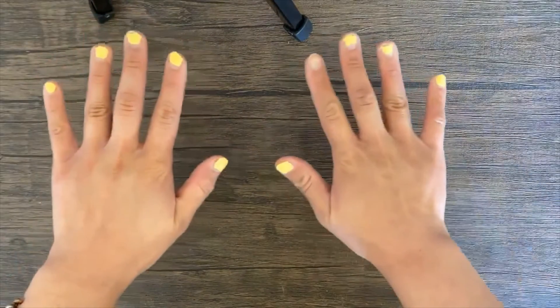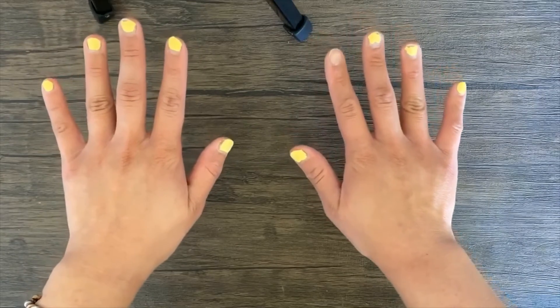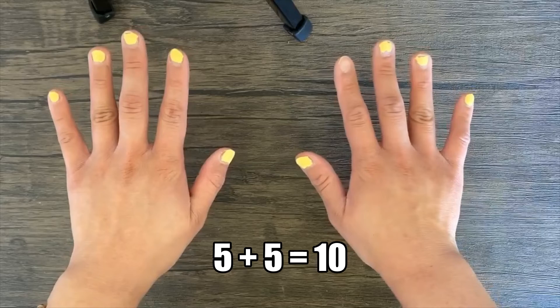Now show me five and five. What's the number sentence that matches? That's correct. Five plus five equals ten.